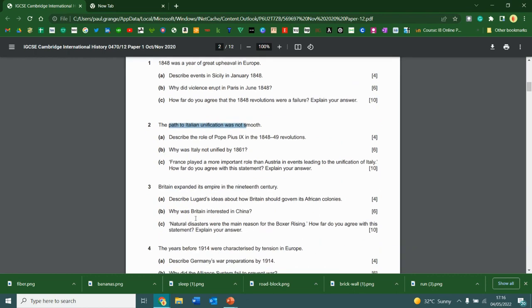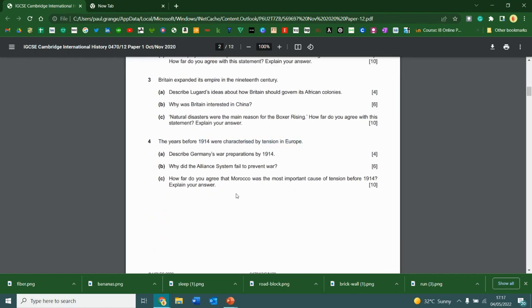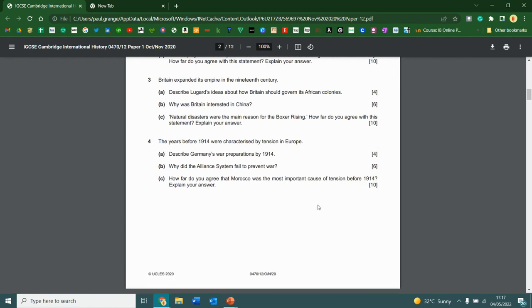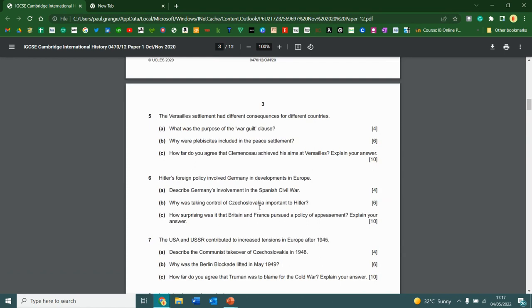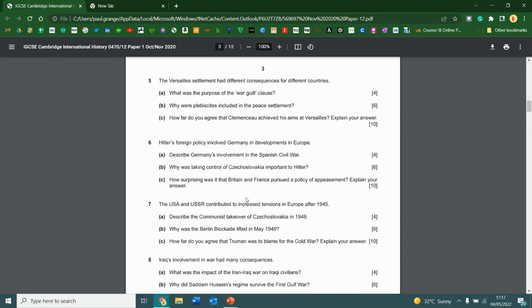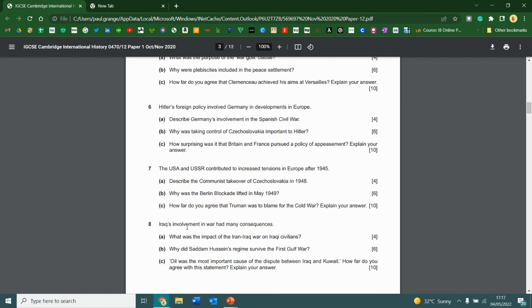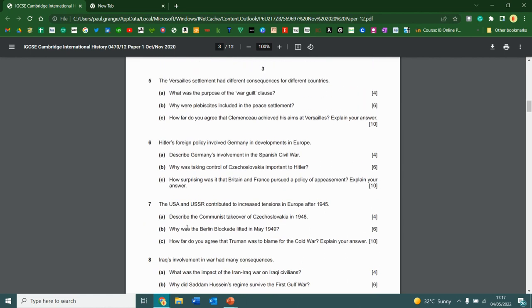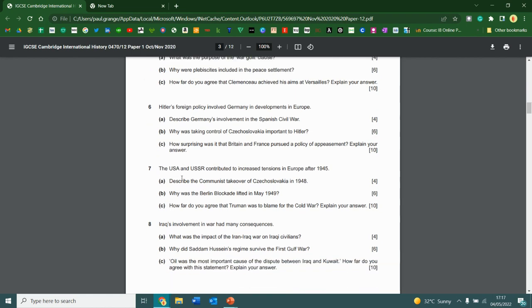However, only four of those questions we've actually studied. The first four, because we've been doing the second part of the course. You're not going to be answering about Italian unification or tensions in Europe before 1914. We didn't spend two years studying those. So we're not going to answer those questions. Instead, you're going to focus on the ones we have studied for two years, starting with the Versailles settlement, the Paris Peace Conference. There will be four topics here, and all you have to do is choose two.